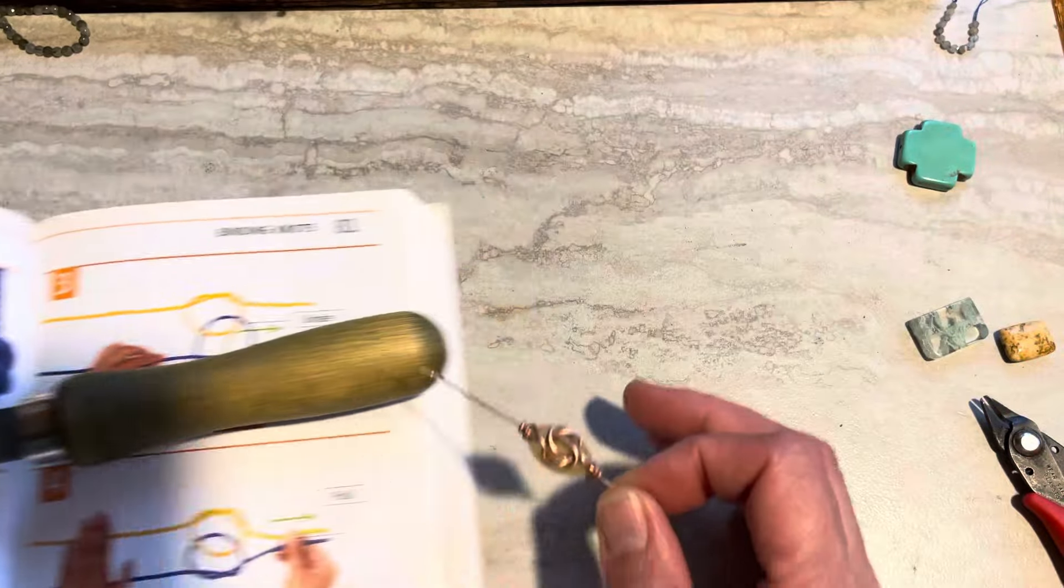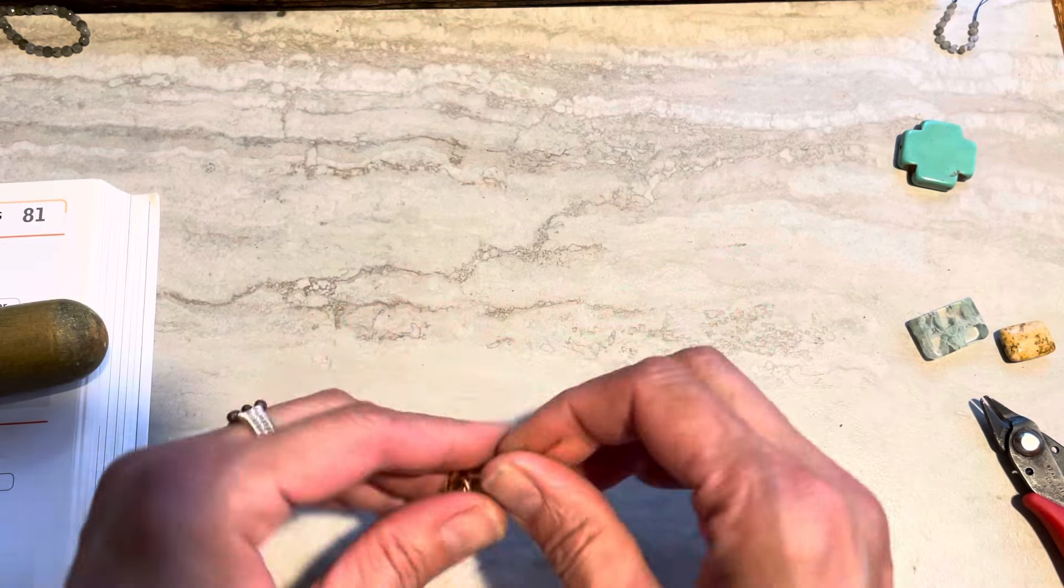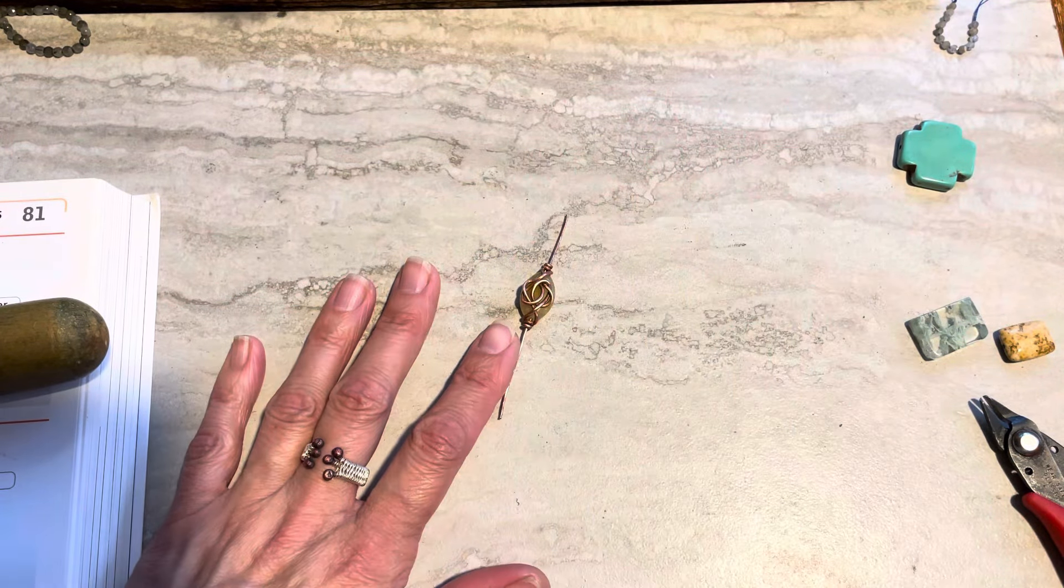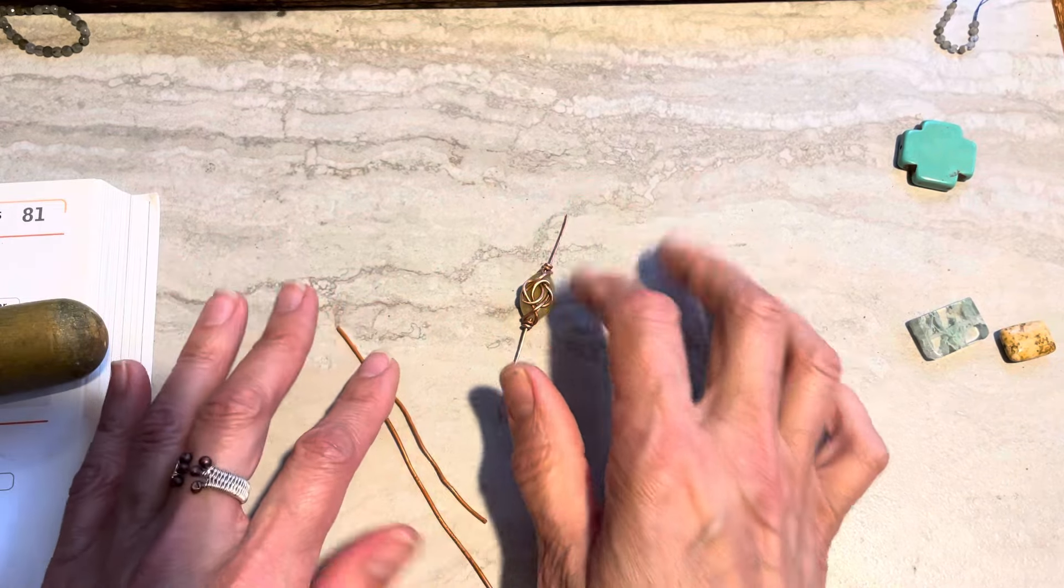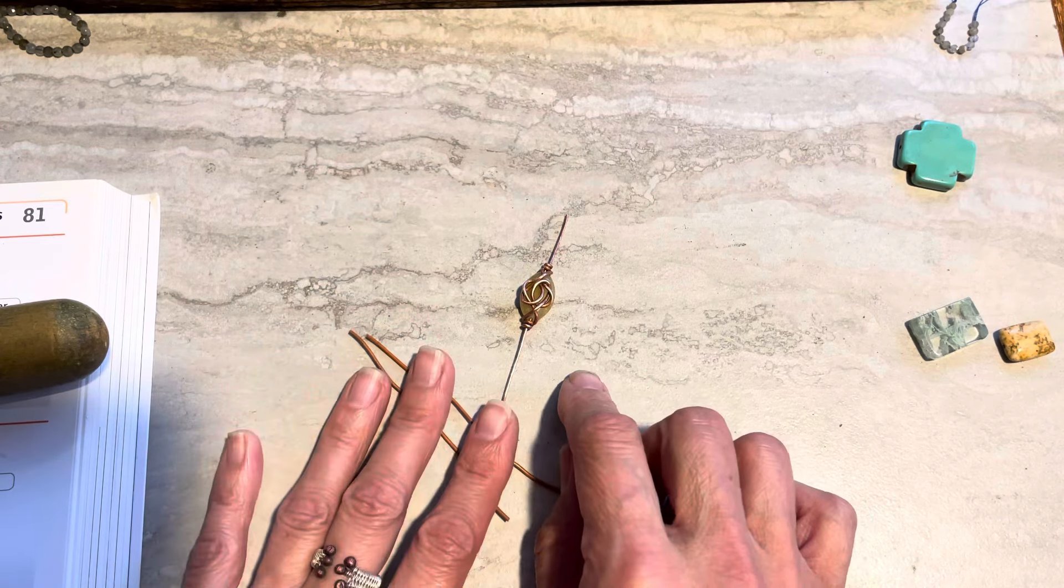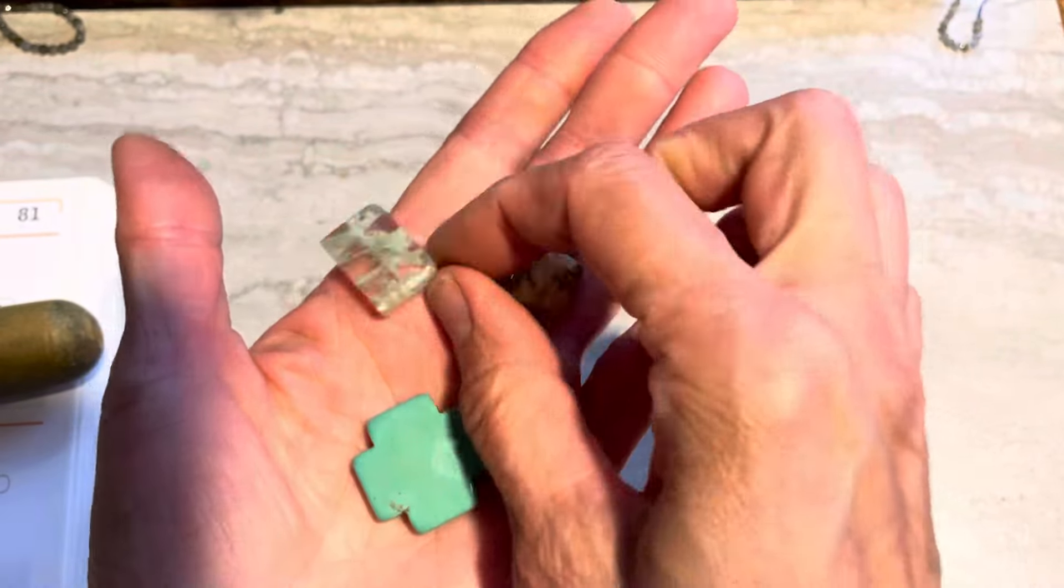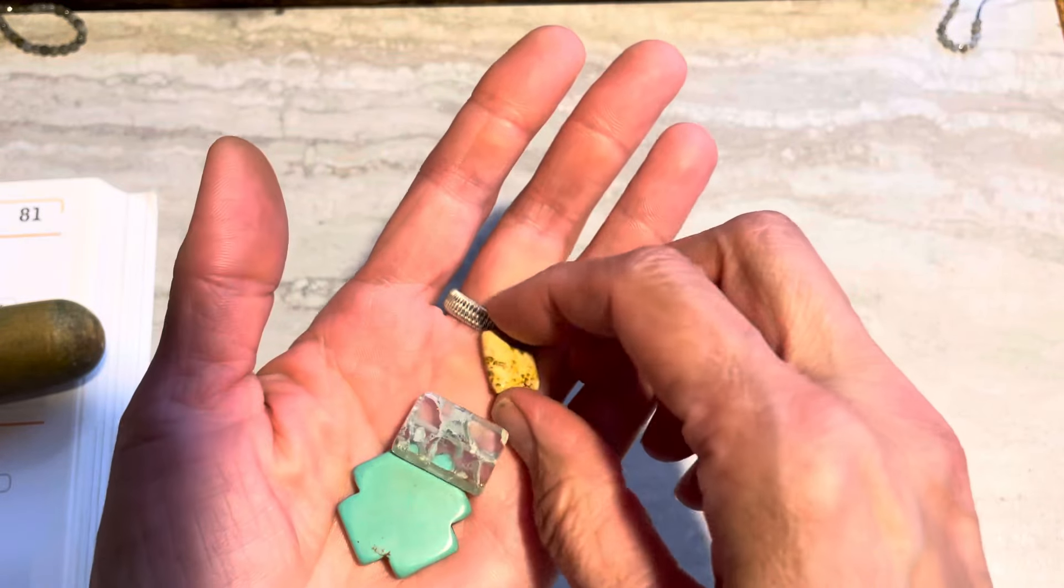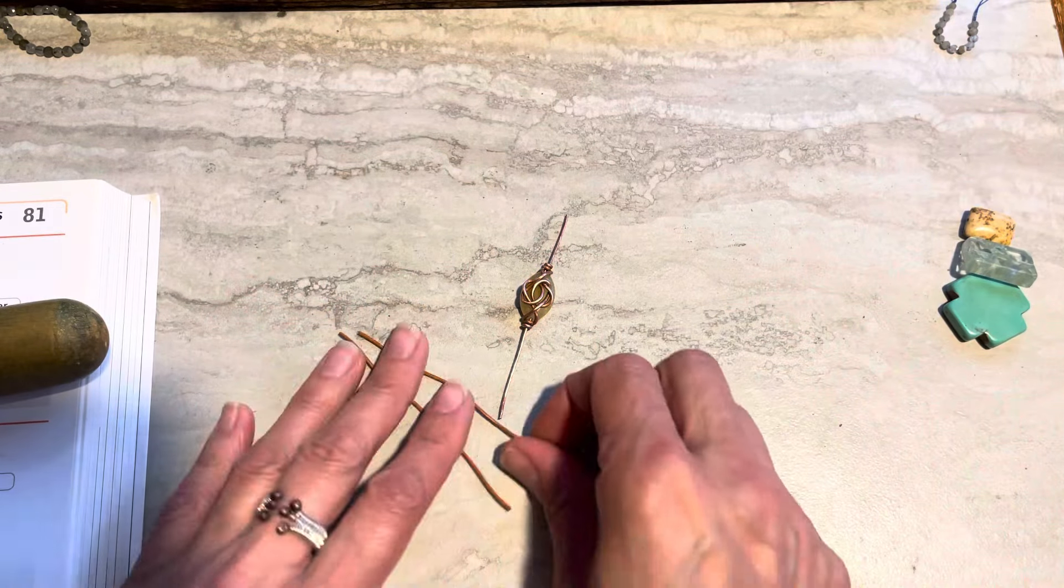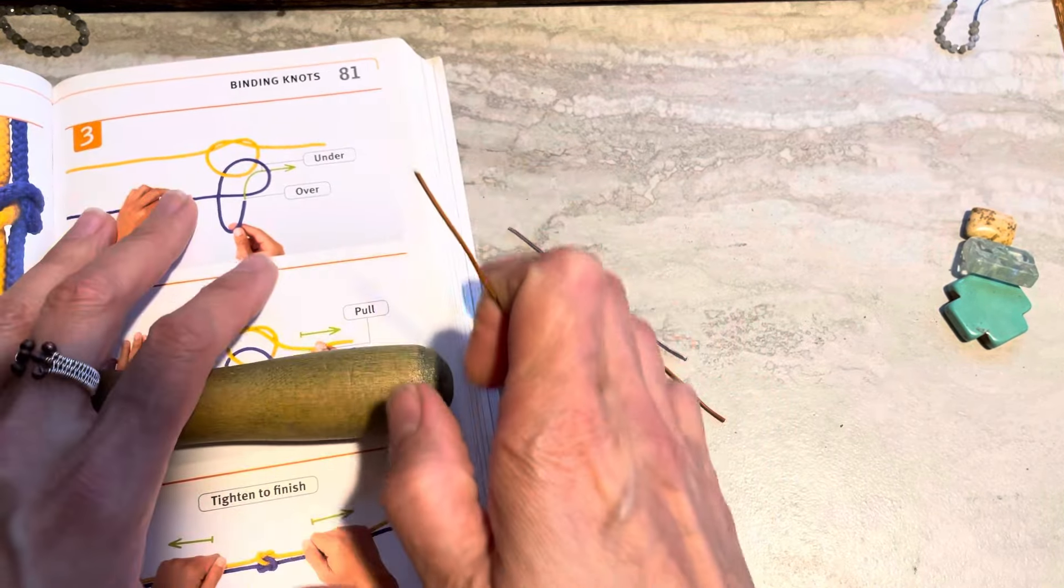I will use copper. You can use sterling silver. I always encourage trying with copper first and then work with more expensive materials if you want to. Pre-anneal your wire. I would use 18 gauge and also 16 gauge for my project. These few beads all drill nicely for my 18 gauge. That's all, so let's start.